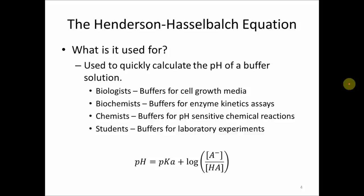What is it used for? As I mentioned before, the Henderson-Hasselbalch equation is used to quickly calculate the pH of a buffer solution. In the real world, biologists, biochemists, and chemists all use the equation to calculate the pH of various buffers for various experiments. Students also use the Henderson-Hasselbalch equation to calculate the pH of buffer solutions for laboratory experiments as well as homework and exam problems.